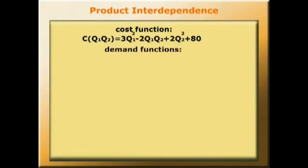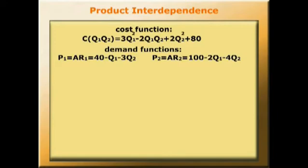The demand functions are as follows. The revenue in each market depends on the quantities sold in the other market. For market 1, P1 = AR1 (remember that price is always the same as average revenue) equals 40 - Q1 - 3Q2. The demand function in market 2 is given as P2 = AR2, which in our case equals 100 - 2Q1 - 4Q2. So the amount of revenue we're going to get for each market partly depends upon what is happening in our other market.